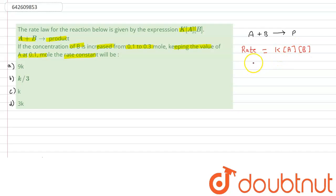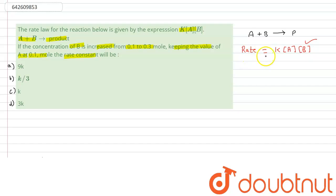It is stated in the question that the concentration of B is increased from 0.1 mol to 0.3 mol, keeping the concentration of A constant at 0.1 mol. The rate of reaction is totally dependent on the concentration of A and B.